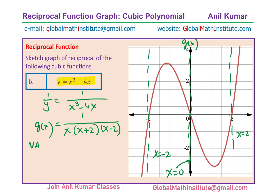Second step: sketch the horizontal asymptote. Since the function approaches infinitely large values at both ends, we have y equals 0 as the horizontal asymptote. Now mark the invariant points — the points where y equals 1 and y equals minus 1 on the original function. These are called invariant points and are common to both the function and its reciprocal.